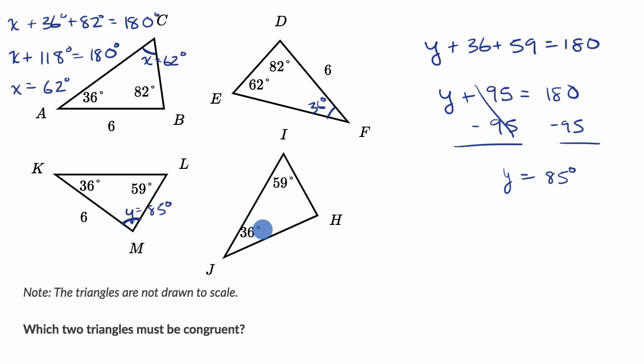And then this last triangle — triangle IJH — also has angles of 36 degrees and 59 degrees, so by the same logic, its third angle also has to be 85 degrees.